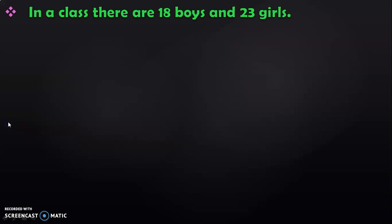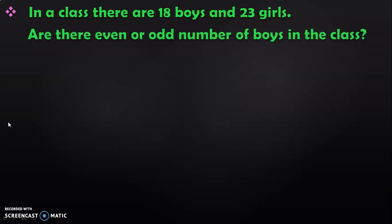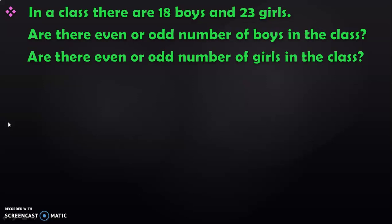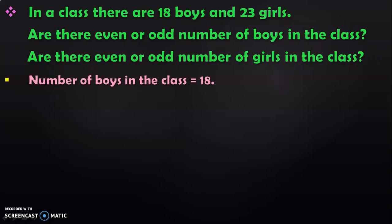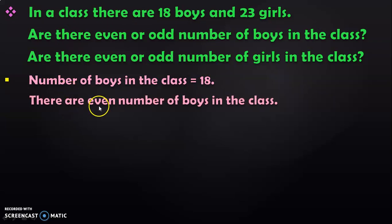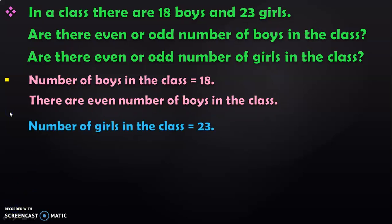Hope it was interesting to do this kind of word problem. Let us do one more example. In a class, there are 18 boys and 23 girls. Are there an even or odd number of boys in the class? Are there an even or odd number of girls in the class? First, write down the information given: number of boys in the class is 18. We know that even numbers have 0, 2, 4, 6, or 8 in their ones place. Here we have 8 in the ones place, so there are an even number of boys in the class.